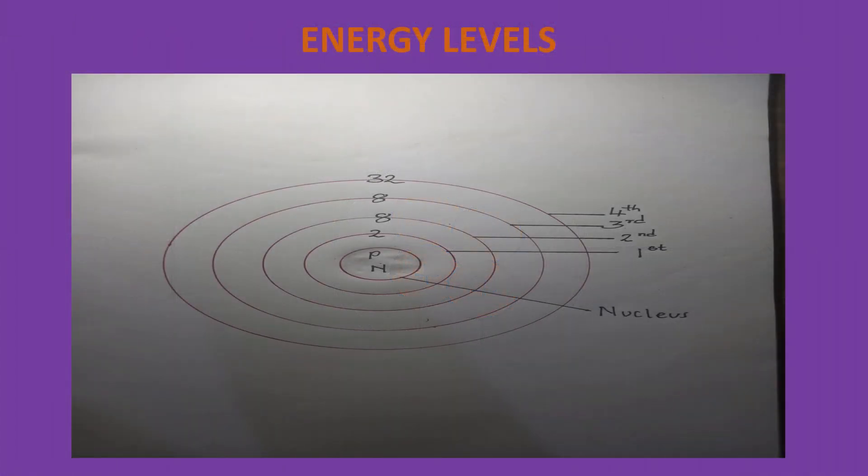An atom can have a maximum of four energy levels where the electrons are based. The energy levels are named from the innermost to the outermost. The first energy level can hold a maximum of two electrons. The second energy level holds a maximum of eight electrons. The third energy level, just like the second, holds eight electrons. The fourth energy level can hold a maximum of 32 electrons.